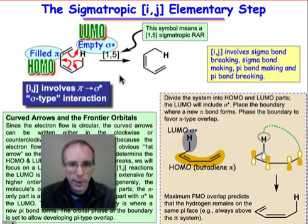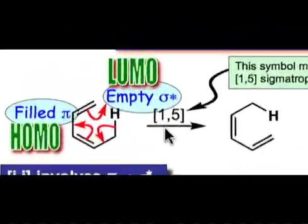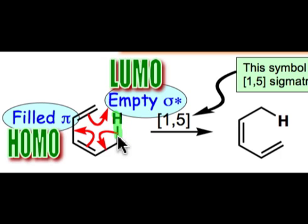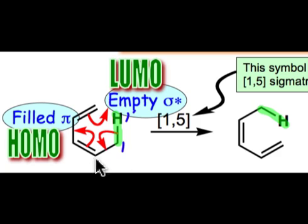Let's perform a frontier orbital analysis on this 1,5-sigmatropic rearrangement. First, let's convince ourselves that the order is 1,5. We can see that it's this carbon-hydrogen bond that undergoes migration and it moves to the position highlighted in the product. Numbering the two terminal positions on the opposite side of the bond that migrates, we'll put a 1' on hydrogen and a 1 on this carbon.